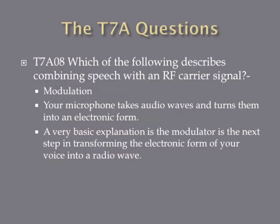Which of the following describes combining speech with an RF carrier signal? This process is called modulation. Your microphone takes sound waves from your voice and turns them into electronic form, then they get modulated or combined with an RF carrier signal produced by an oscillator. Your transmitter takes that and produces a radio signal from it. So modulation describes combining speech with an RF carrier signal.